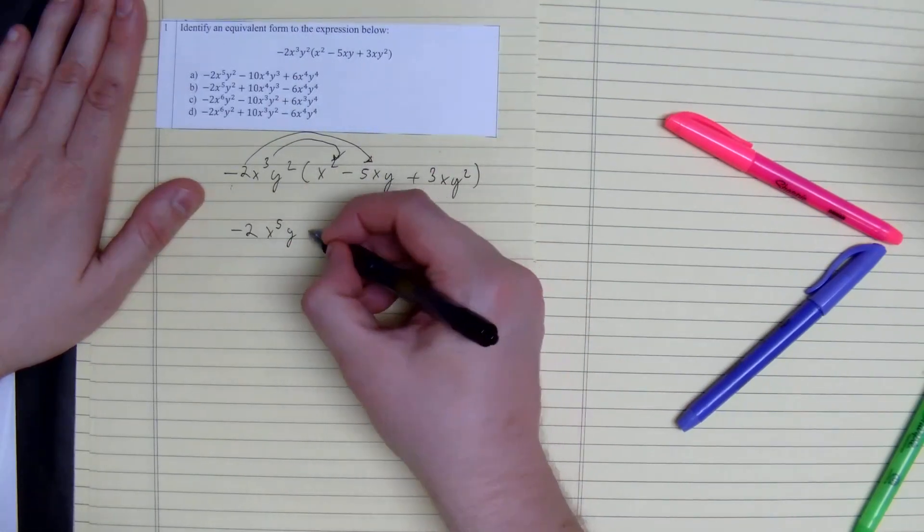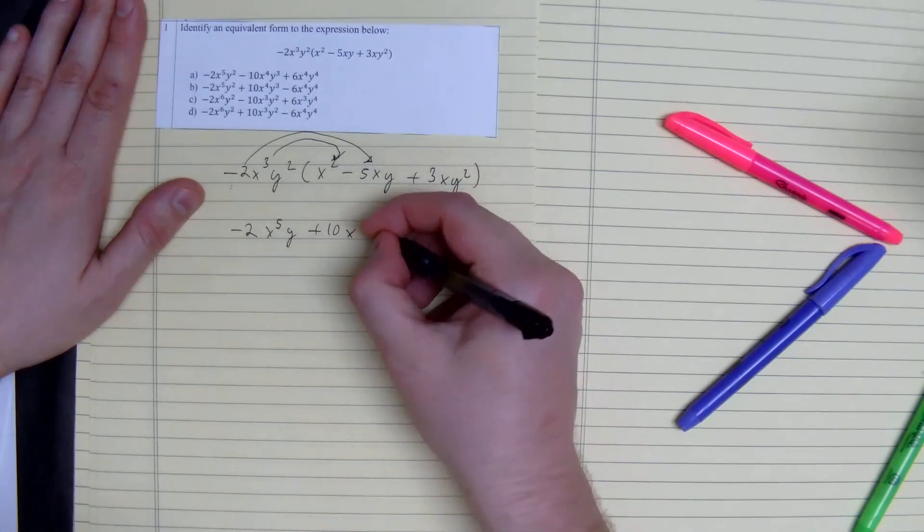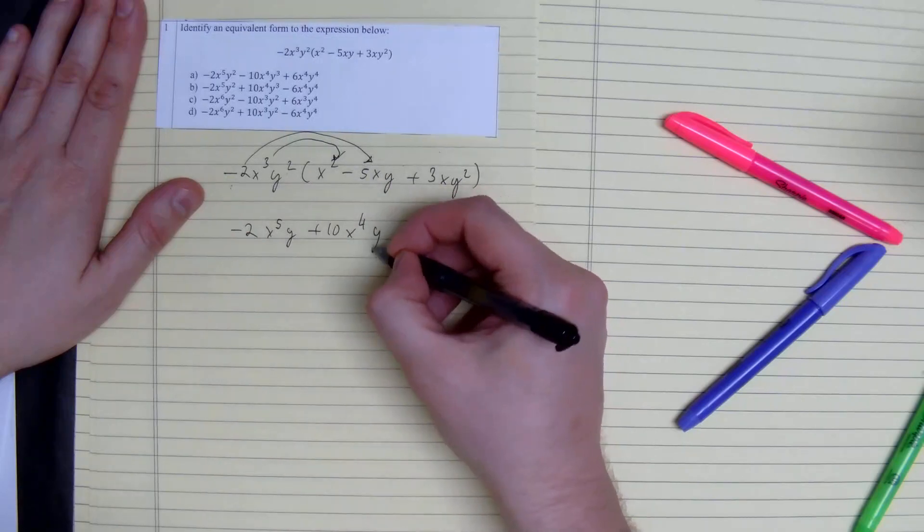Negative 2 times negative 5 gives you plus 10. 3 plus 1 gives you x to the 4th. 2 plus 1 gives you y to the 3rd.